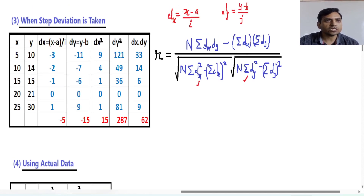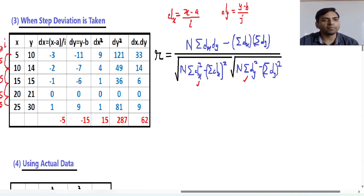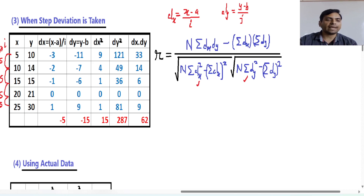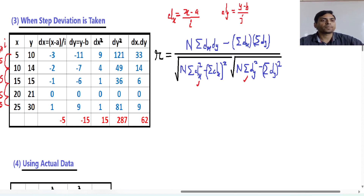We will see there is a constant gap in the x column of 5 — there is a constant gap of 5 in all the terms, and this gap is considered as i. Sometimes this gap may be in y also. That gap is considered as j. So if there is a constant gap in x, it is considered as i. If there is a constant gap in y, it is considered as j. In this case there is no constant gap in y, so we will not consider the j quantity.